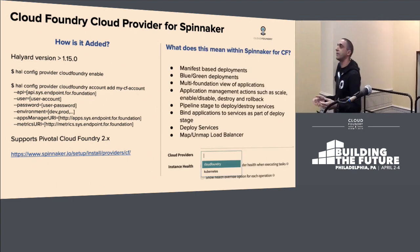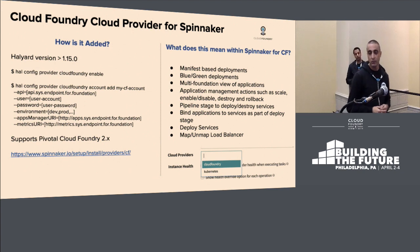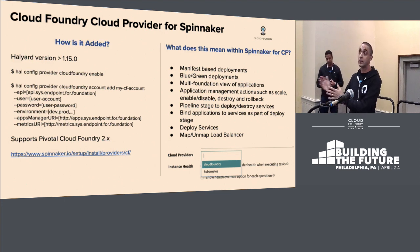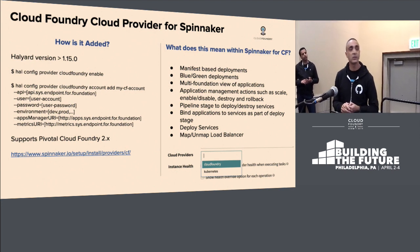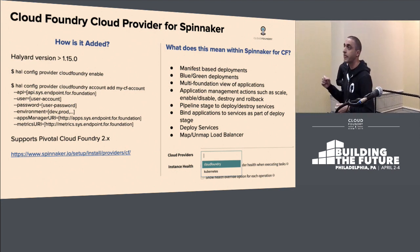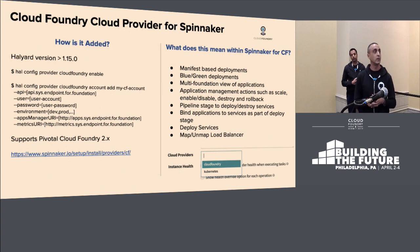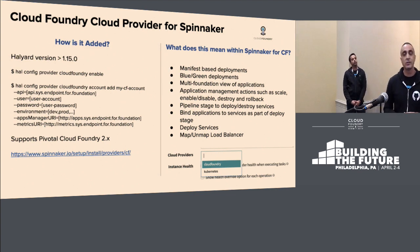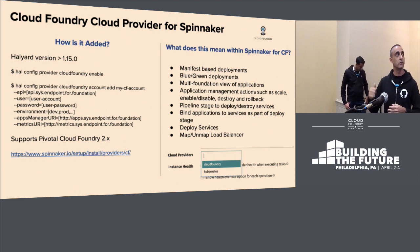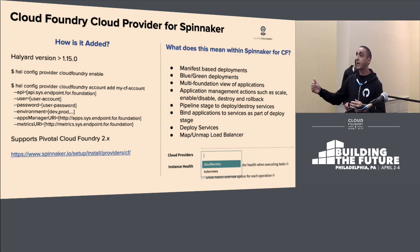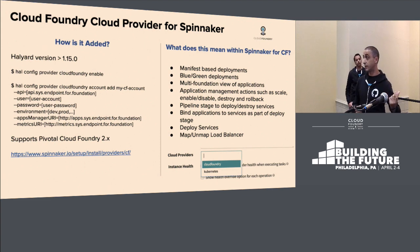Once you've added Cloud Foundry, you get manifest-based deployments, blue-green deployments, and a multi-foundation view of applications — you can add multiple Cloud Foundry accounts to Spinnaker and see all your applications across all your foundations. Application management actions like enable, disable, and destroy all map back to Cloud Foundry: disable is CF stop, enable is CF start. So Spinnaker makes those calls on your behalf.